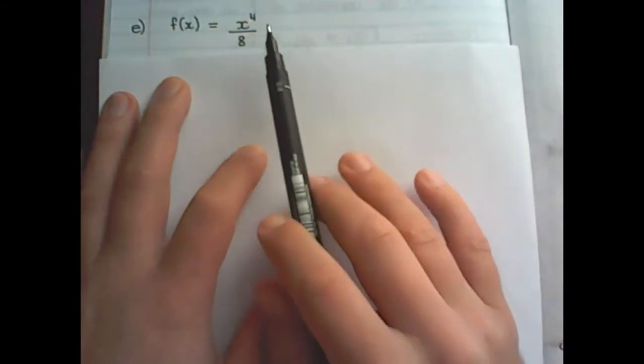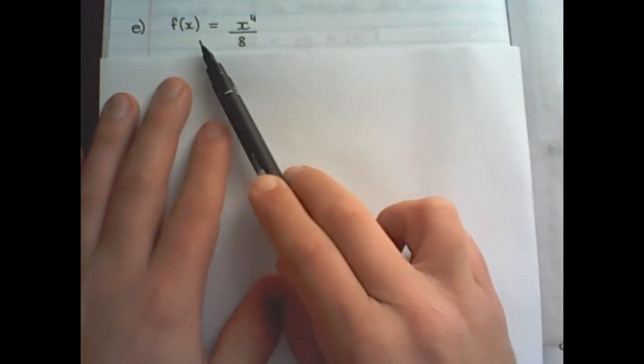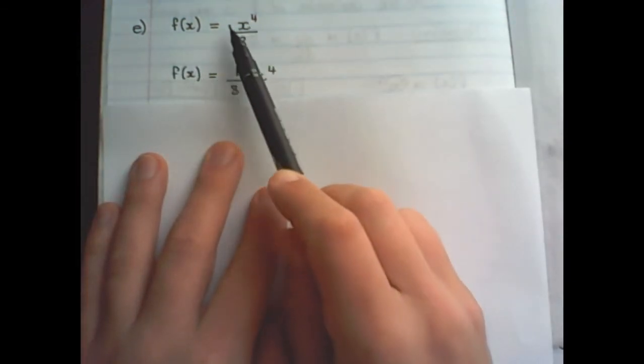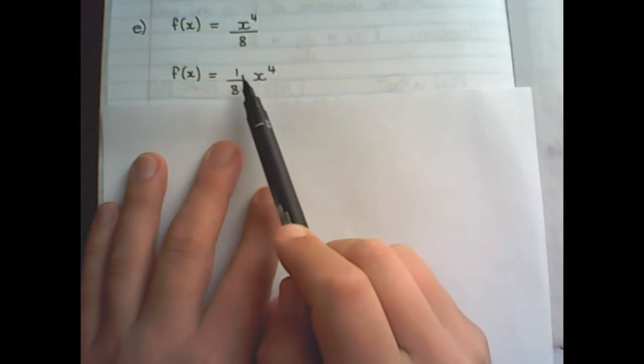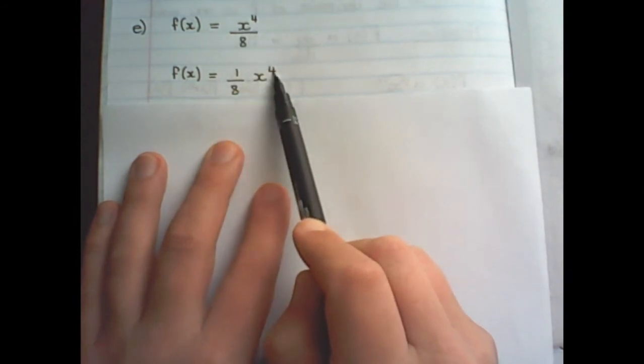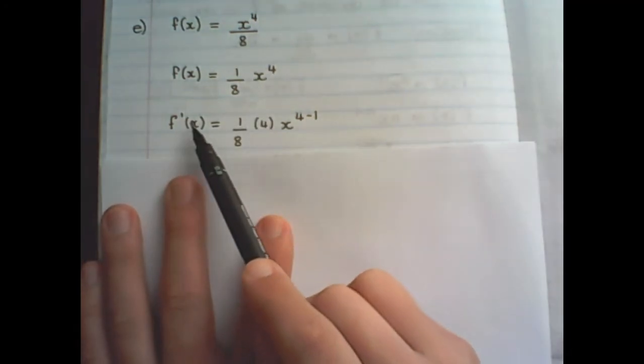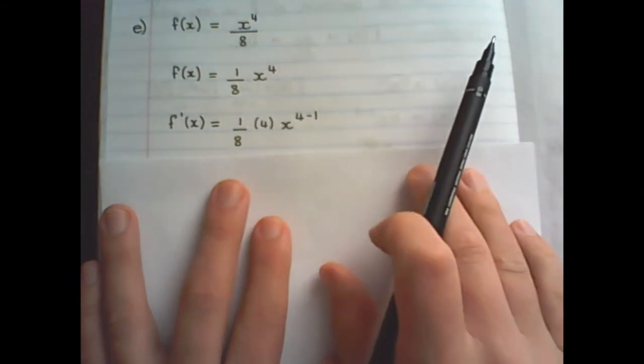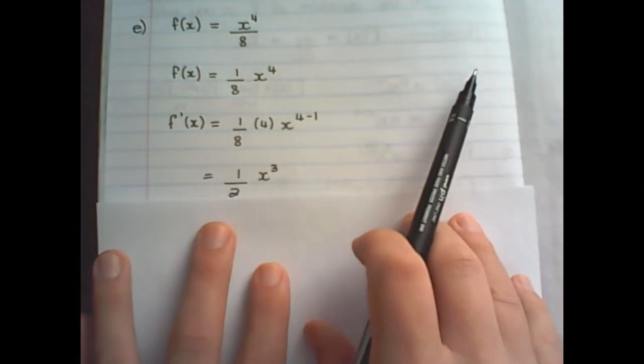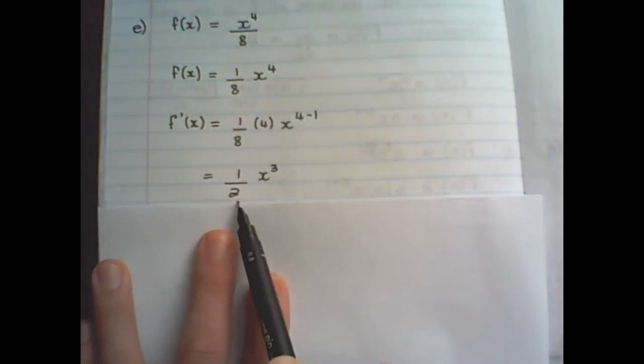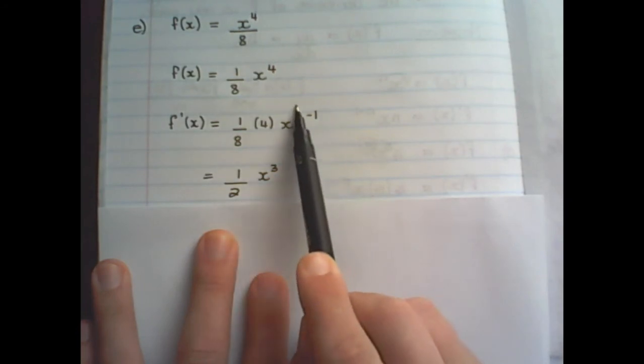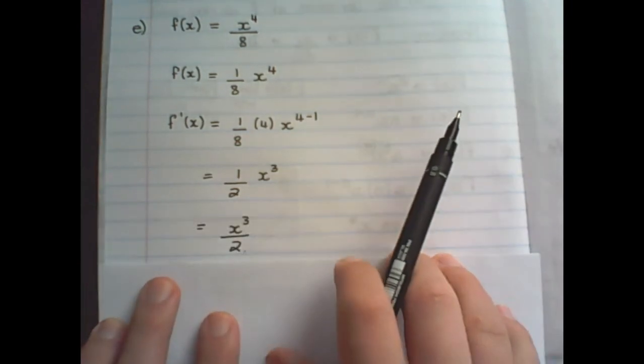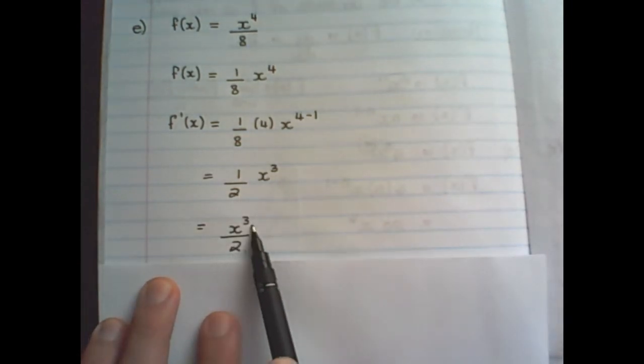Now, let us move on to a fraction. I am going to show you two ways on how to differentiate a fraction. First, we can rewrite x to the power of 4 over 8 as 1 over 8 times x to the power of 4. And to find the first derivative, I multiply 1 over 8 with the exponent of 4 and I subtract 1 from the exponent. 4 over 8 will give me a half. And then simplifying the exponent is x to the power of 3. You can also write it as x to the power of 3 over 2.